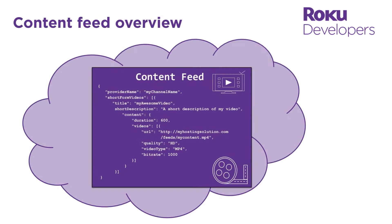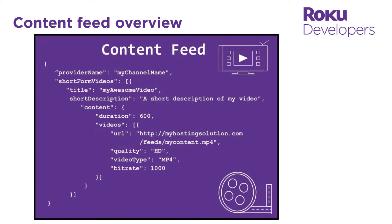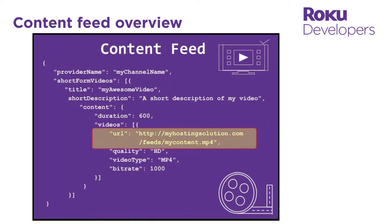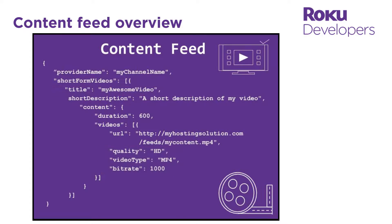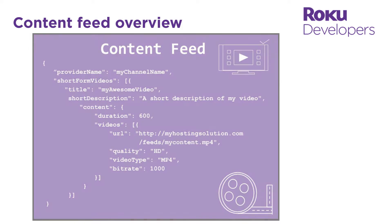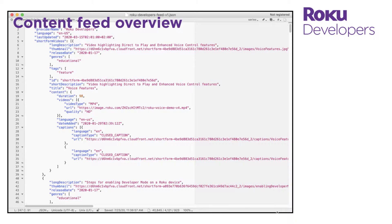The content feed is a cloud-hosted file that contains the metadata for each title in your catalog. It tells your channel where to find the movie or television show to be played, and the title, description, thumbnail image, and other information to be used when displaying it. A content feed typically contains hundreds to thousands of content items.